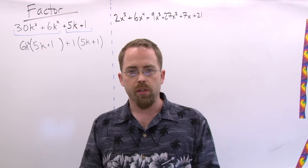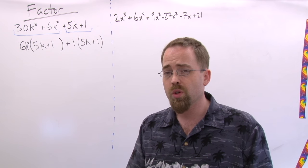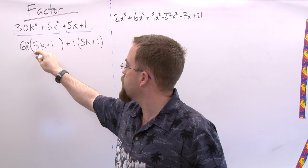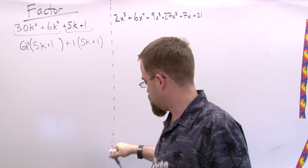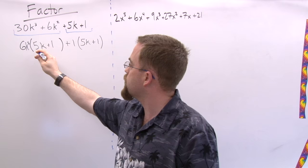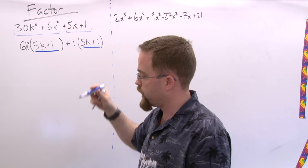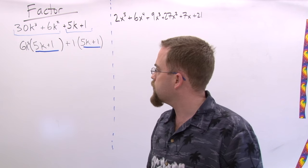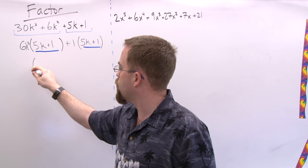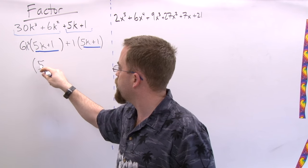And now the tricky part here is what do we do once we have that. People get confused and think that somehow this expression is going to have to be repeated in our answer, that this is going to have to happen twice somehow in our answer. But really this only happens once, that this 5K plus 1 happens once in our answer.